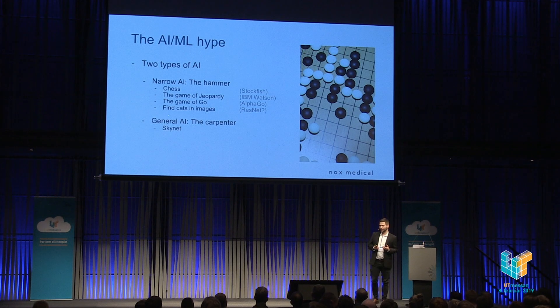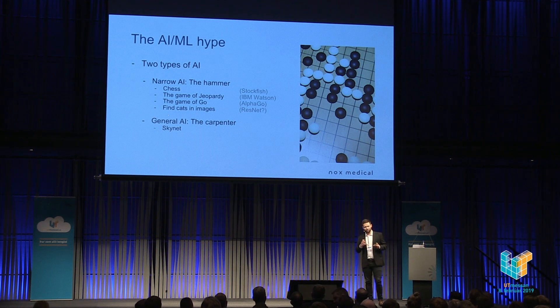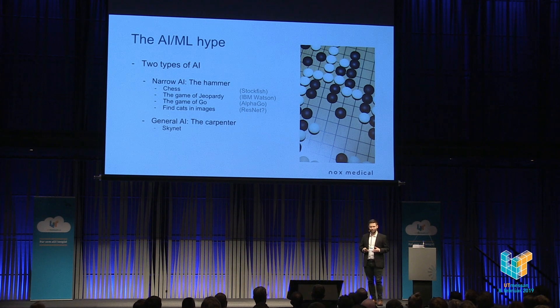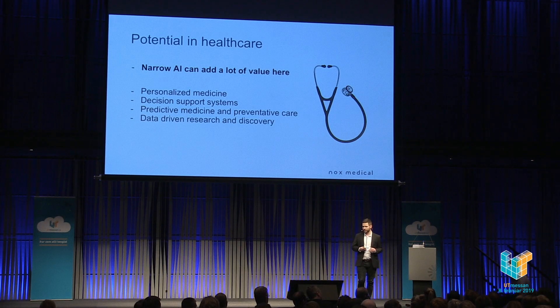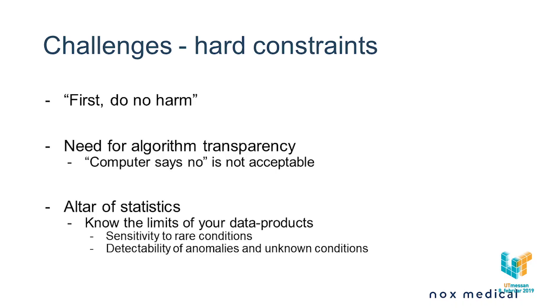General AI is the carpenter, the creative problem solver. And this, in my opinion, is just sci-fi. We have no idea how to make this. In healthcare, there's a lot of potential for these narrow AIs though. There's a lot of call for personalized medicine and decision support systems, predictive medicine and preventative care, and also data-driven research and discovery. So there's a lot that narrow AI can do, although it's limited.